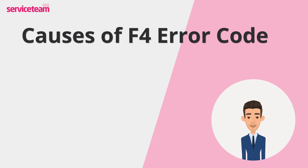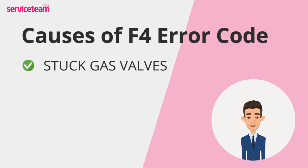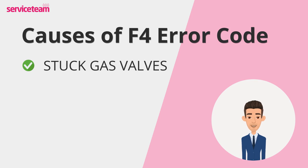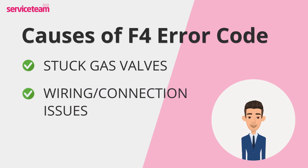Let's see what causes the F4 error. Stuck gas valves are one reason for the Wiesmann F4 fault. Gas valves regulate the flow of gas into the boiler — normally closed, they open when heating is activated, allowing gas to flow. If stuck, they prevent fuel from reaching the boiler, stopping the flame from lighting. Faulty wiring or poor connections can also cause gas valves to send inaccurate signals to the PCB, triggering an F4 lockout. Even if the flame is lit, the PCB might fail to detect it due to these connection problems.